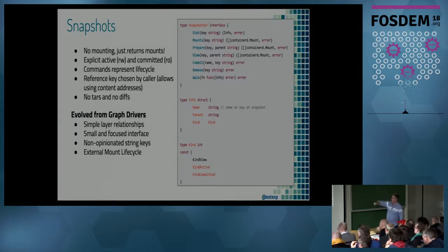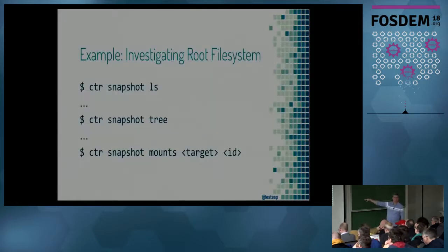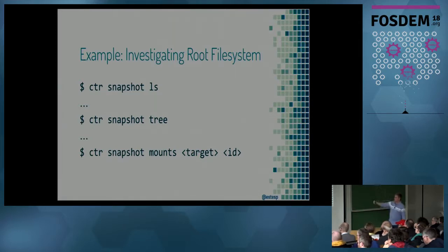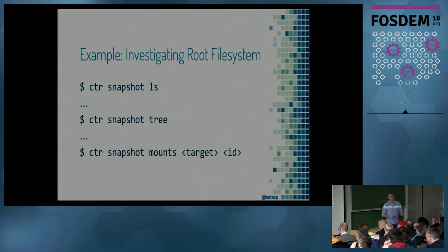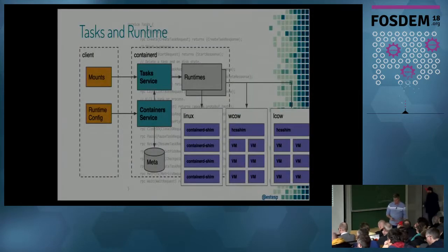There's no more deep inner linking between the graph driver all the way up to how a runtime sees that assembly of layers. This makes it very simple to ask RunC to run my container — I just hand it a list of mounts straight from the snapshotter. RunC can assemble those, mount them, and you're off and running. A much smaller interface than graph drivers, simpler relationships, and this external mount lifecycle that you can actually play with using our CTR tool — the client for ContainerD. You can list snapshots, view them in tree form, and even tell it to hand you that set of mounts and mount it directly in Linux without actually running a container.